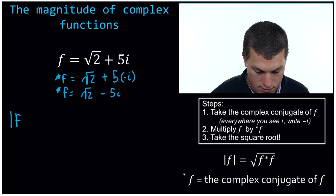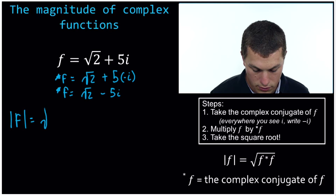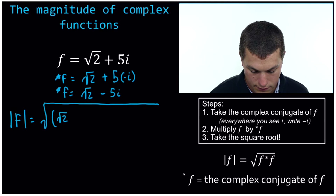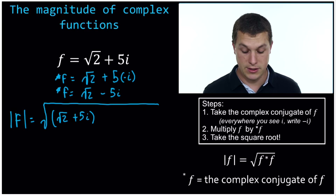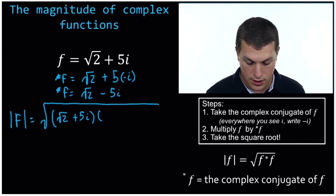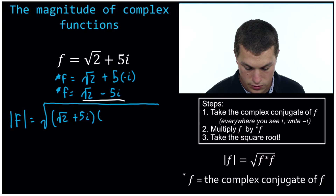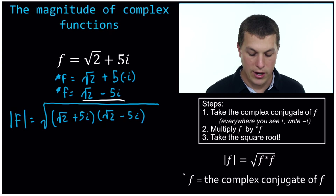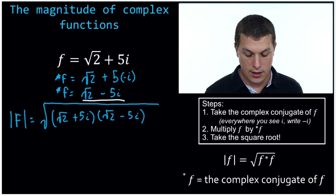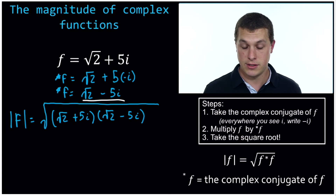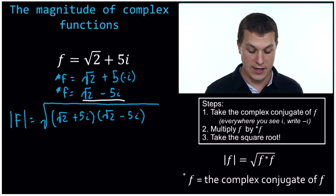The magnitude of f is equal to the square root of our first number, square root of 2 plus 5i — that was the original complex number — times our complex conjugate, which is square root of 2 minus 5i. Now we've got to remember how to multiply two polynomials. Here we can always do what's called FOILing: we multiply the first, then the outer numbers, then the inner numbers, and then the last numbers.